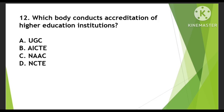Next question: Which body conducts accreditation of higher education institutions? Accreditation and quality assurance — who does this? Options are UGC, AICTE, NAAC, or NCTV. NAAC is responsible for grading institutions with grades like A++, A+. So the right answer is C, NAAC.